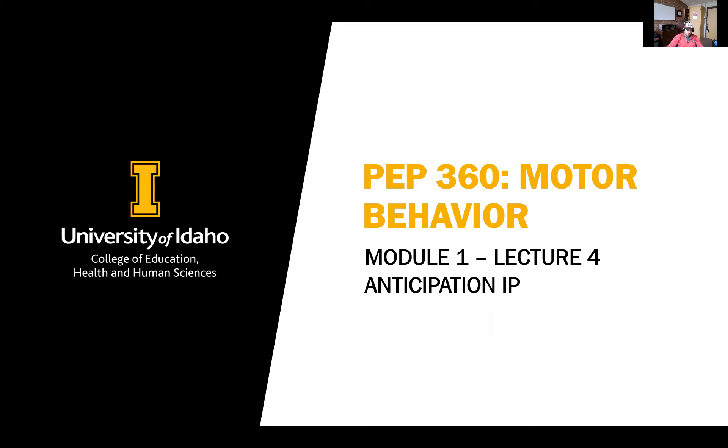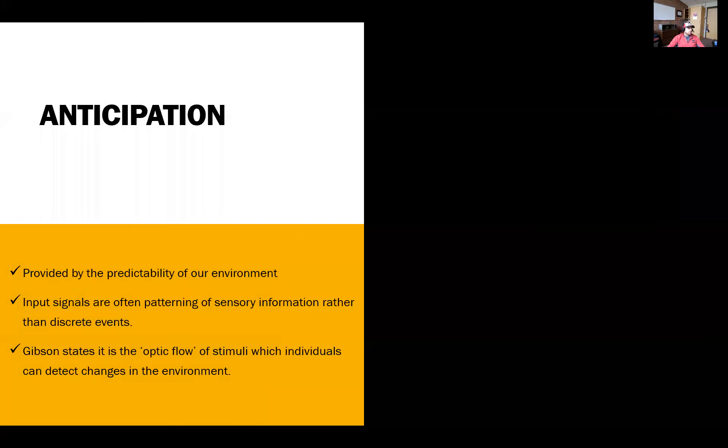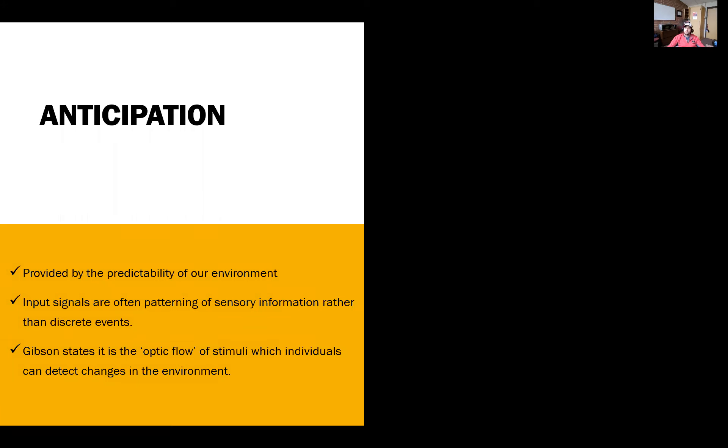All right, so welcome to lecture four of module one on anticipation and how anticipation relates to information processing. In the previous lecture we started talking about reaction time and studies with the ability to remove anticipation. Now when we talk about anticipation, it allows us to provide that predictability of our environment and anticipation is enhanced.